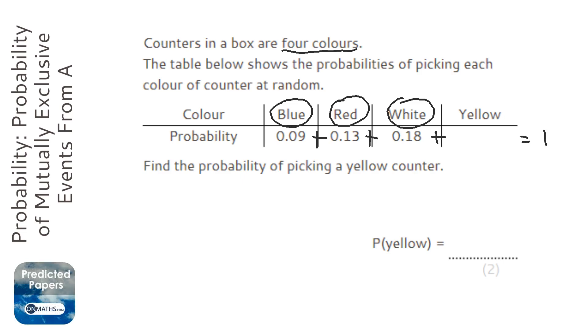So what we want to do is start off with the one and take away all the probabilities that we know—the blue, the red, the white—and when we do that, that will leave us with the yellow.